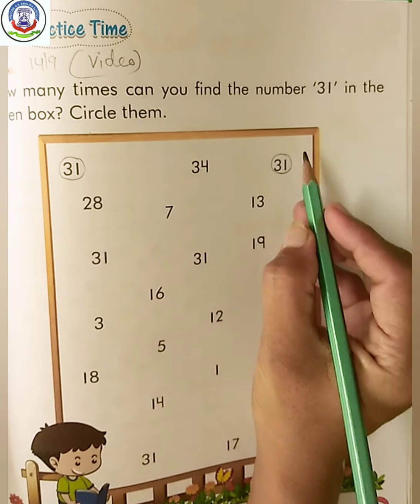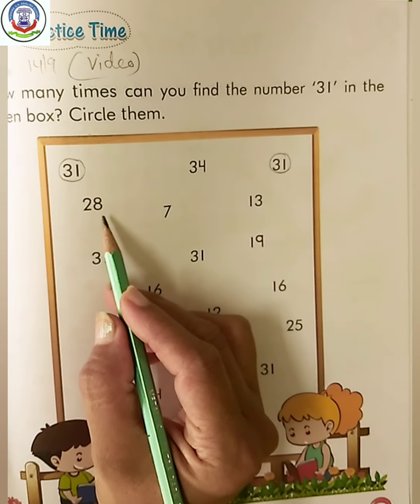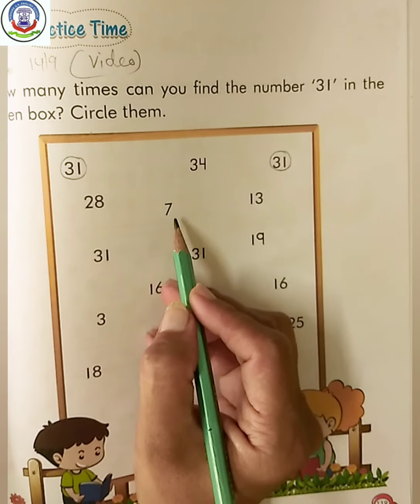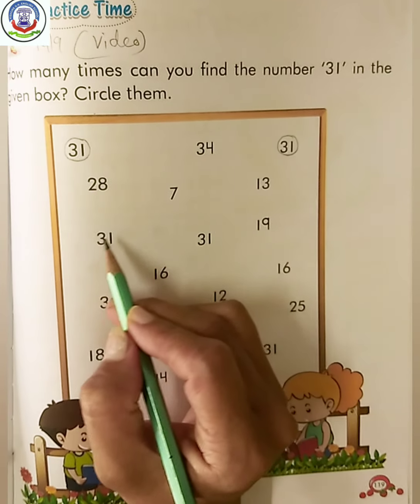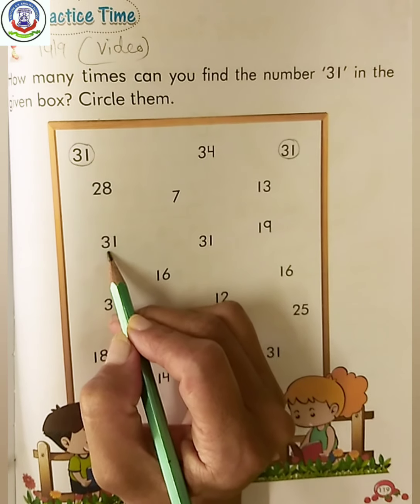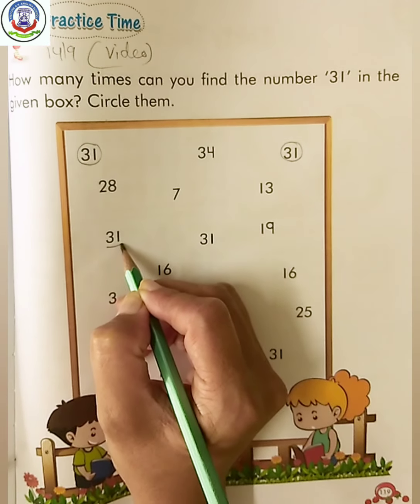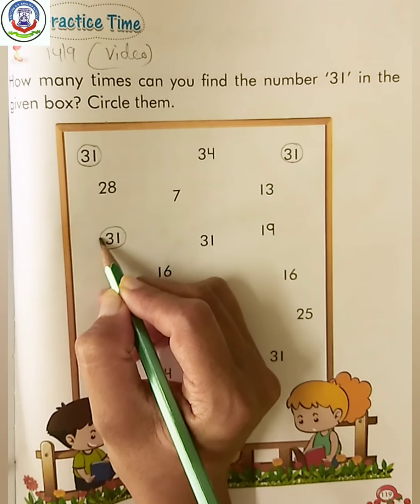Now find out where is 31. Here it comes again 31. Circle it properly.